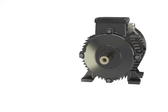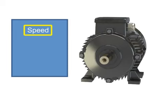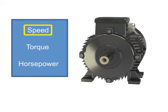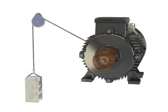The three factors that determine the type of work a motor can produce are speed, torque, and horsepower. Speed is defined as how fast the motor performs its work. For example, a shaft can rotate slowly or quickly. The typical units of measurement for rotational motor speed are revolutions per minute, or RPM.